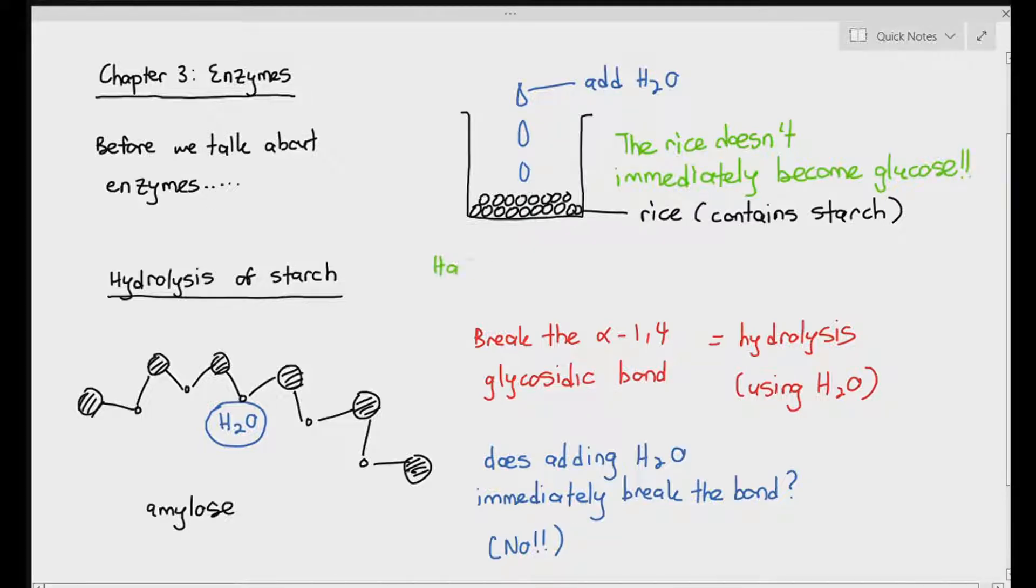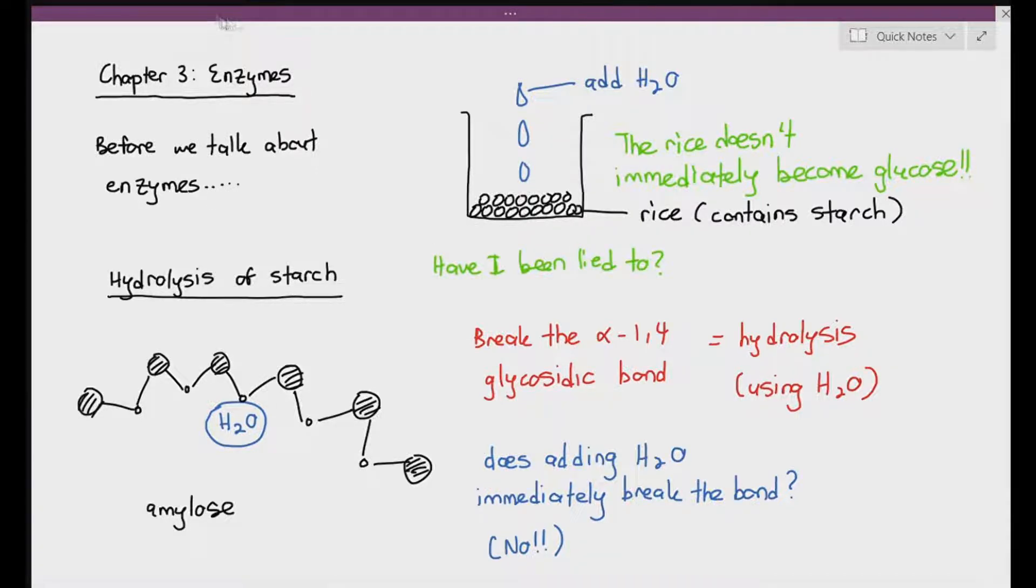So you might be thinking to yourself, wait a minute, have I been lied to? Because in chapter 2, you were told that to break these covalent bonds, such as glycosidic bonds, you needed to carry out something known as hydrolysis, which is using water. So were you lied to? Well, no, you were not lied to, exactly.